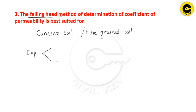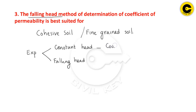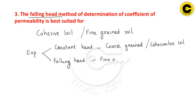We are talking about falling head method and constant head method for permeability. The constant head method is used for coarse-grained soils, which are cohesionless soils. The falling head method is for fine-grained soils.